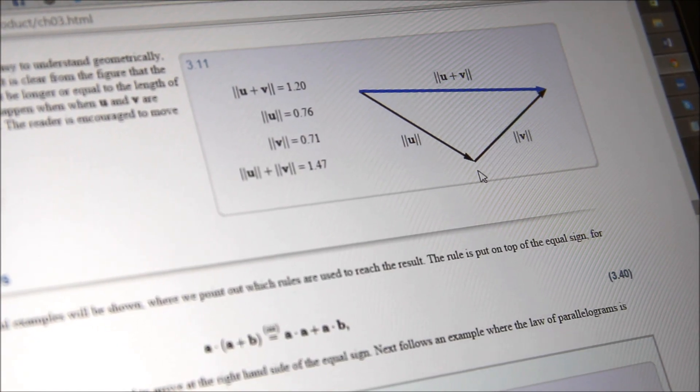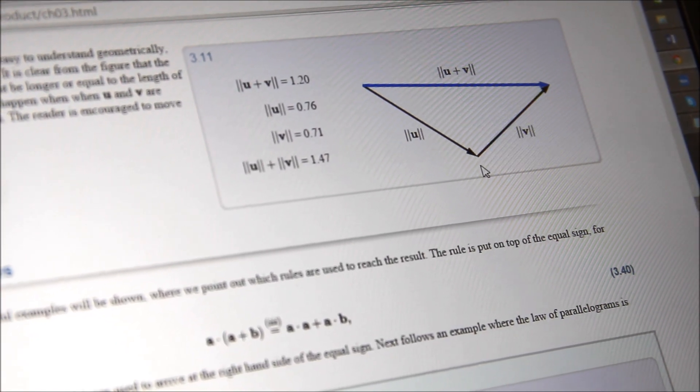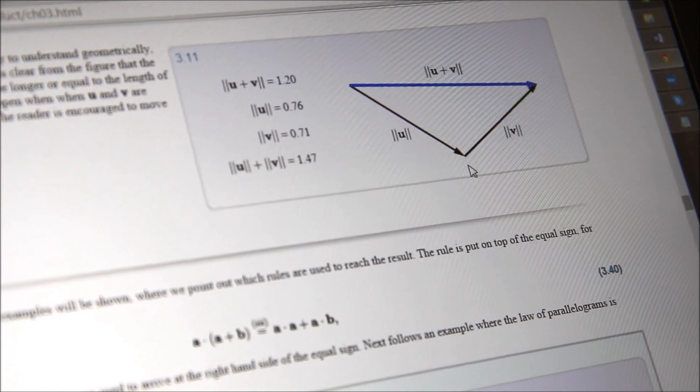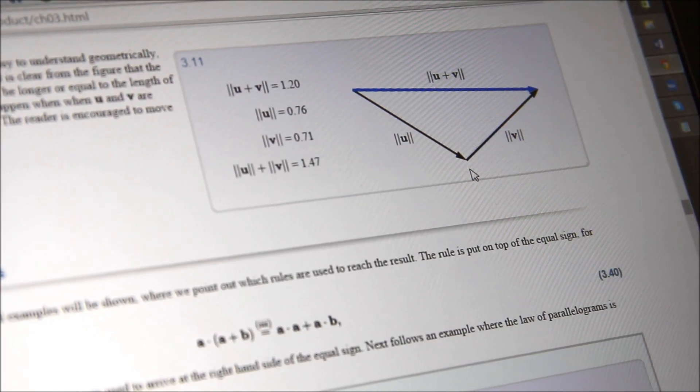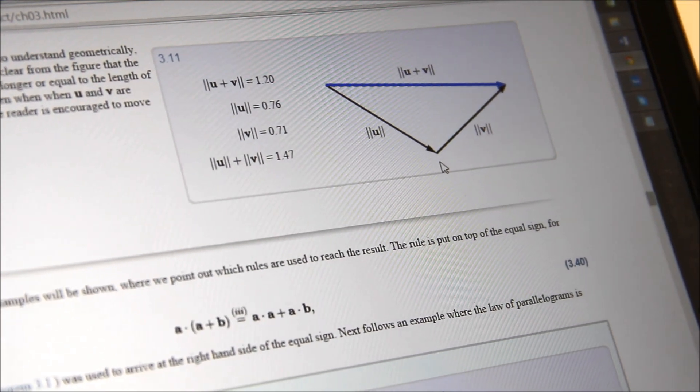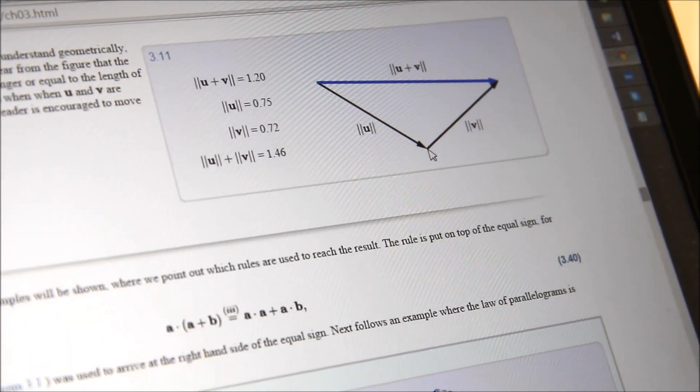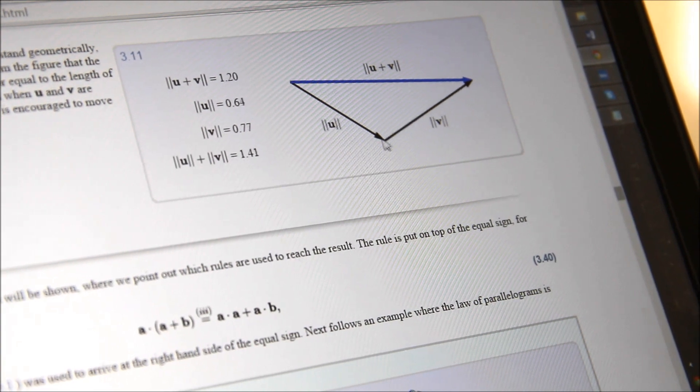So this is an example of what the book looks like. It looks like a traditional mathematics book in linear algebra. You'd have explanations, definitions, and figures. But one of the interesting things that we want to experiment with is to use interactive figures. Every figure is interactive.